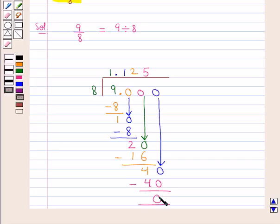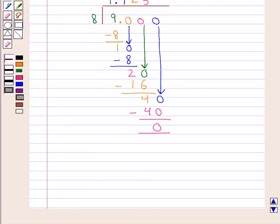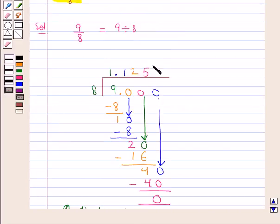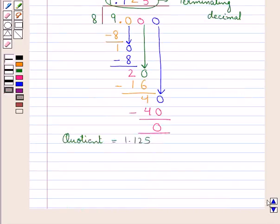Now since we get the remainder as 0, the division process terminates and we get the quotient as 1.125. This quotient is a terminating decimal since the division process terminates when the final remainder 0 is reached.